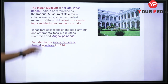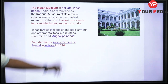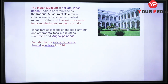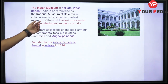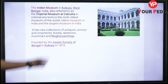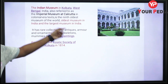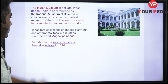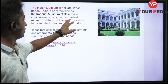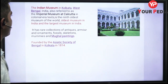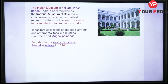The Indian Museum in Kolkata, West Bengal — also known as the Imperial Museum at Kolkata — is the ninth oldest museum in the world. It is the oldest museum and the largest museum in India.